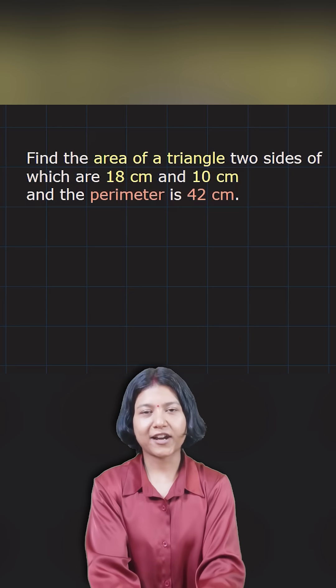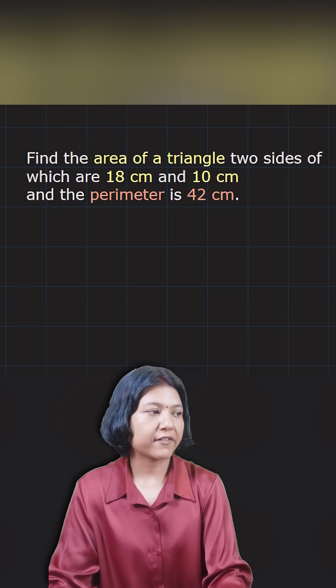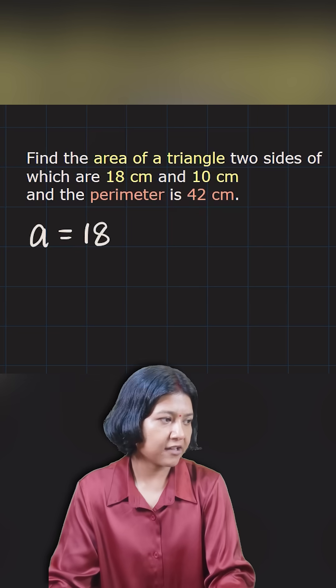How do you find the area of a triangle provided you have just the sides, no angles, nothing? In this case they have given you the first side as 18 centimeters. I'm going to write that as a.